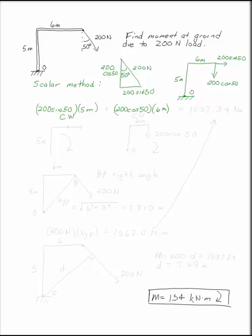200 sine 50 acts at 5 meters, that's this force. That would tend to spin this clockwise. 200 cosine 50 acts at a distance of 6 meters, acts down, and would also tend to spin the point O clockwise. If you have two clockwise moments, you can add them together.